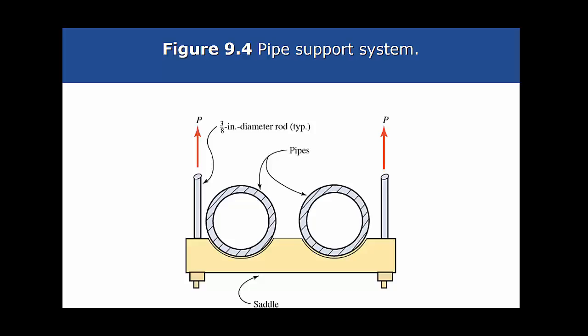Okay, so example 9-3, on the same page, picture's on the next page, looks like what you're seeing there on the screen. It says steel rod suspenders are to support pipes in a power plant, as shown in figure 9.4.